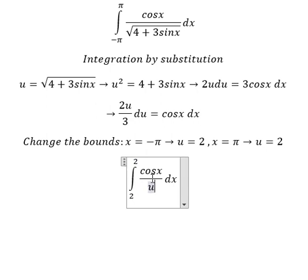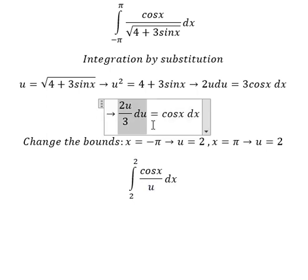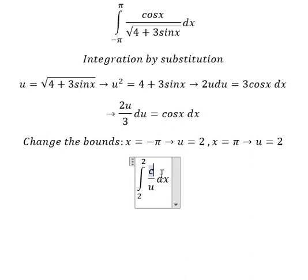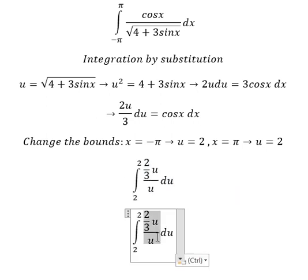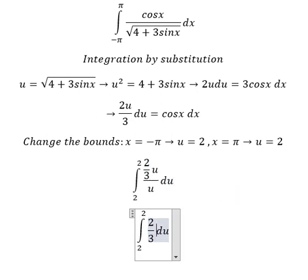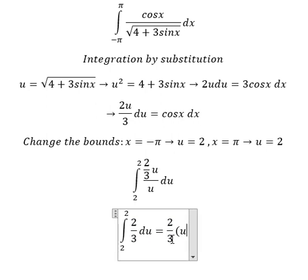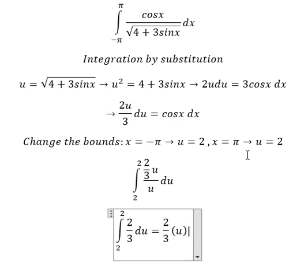The square root cosine x dx we change for this one. So we simplify: we have 2 over 3, and in this one you got u, and we put the bounds from 2 to 2.